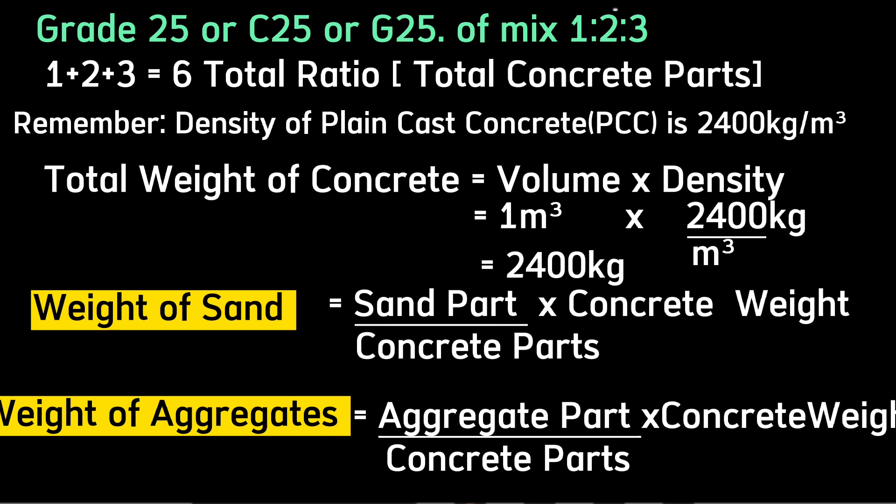That is one part of cement, two parts of sand, and three parts of aggregates. The total parts will be 1 + 2 + 3 = 6. We get the weight of sand by taking the part of sand divided by total concrete parts, multiplied by the concrete weight. Similarly for aggregates and cement.